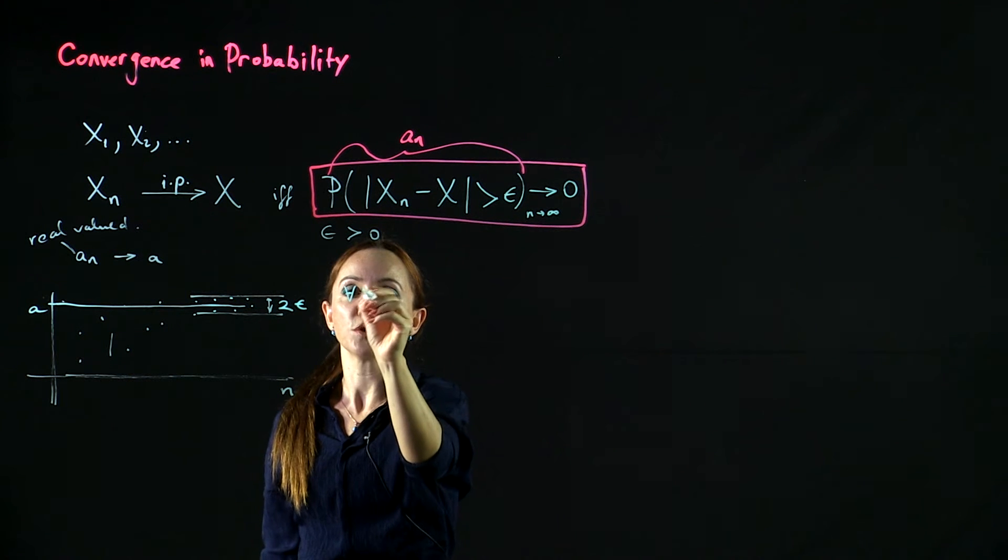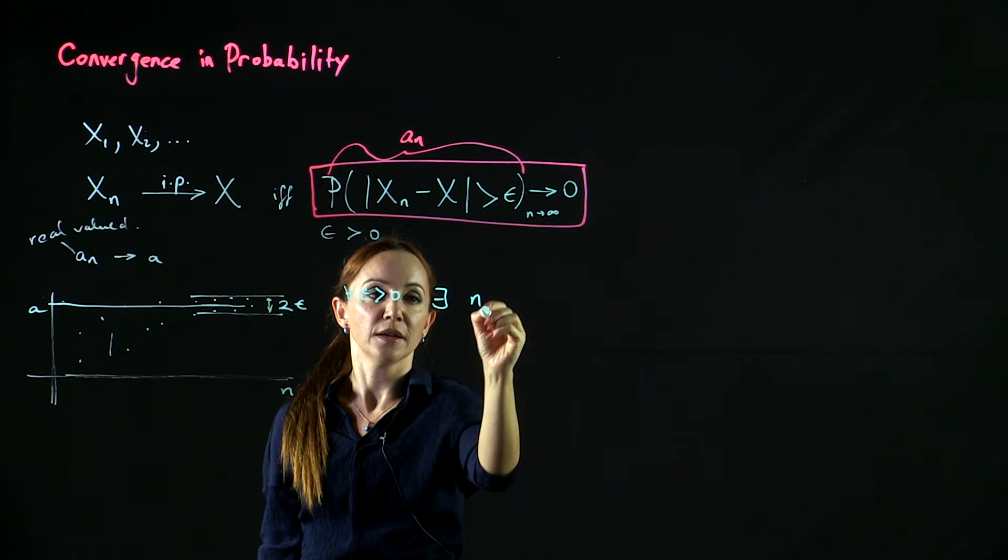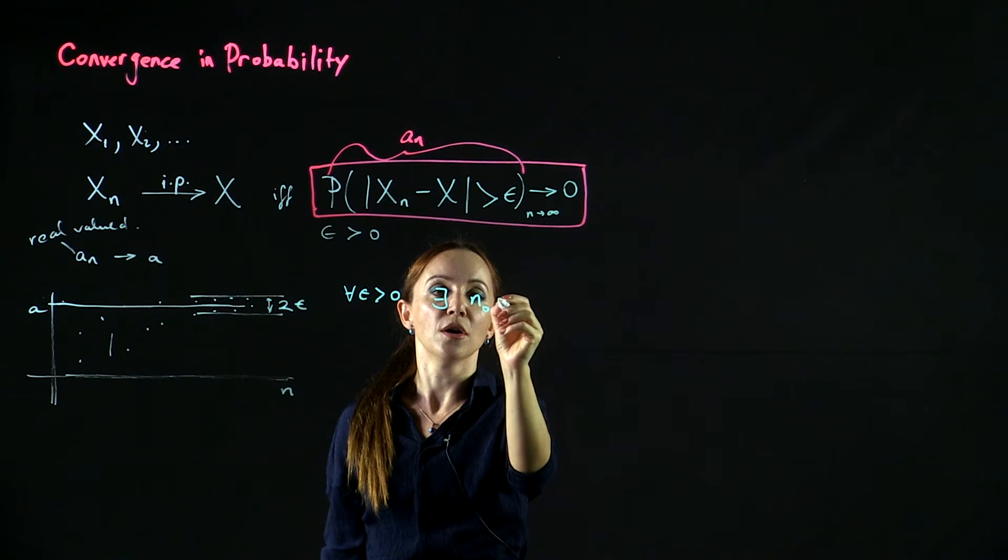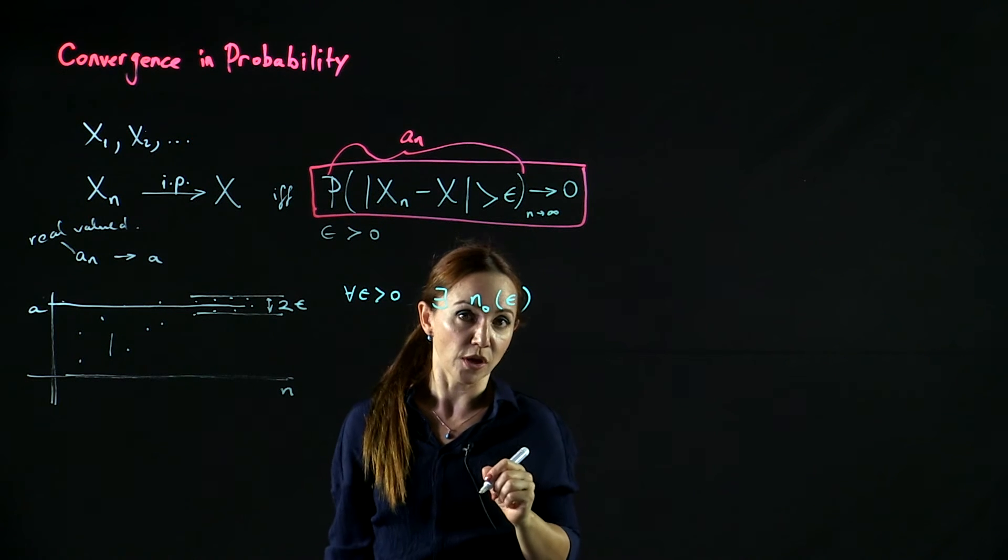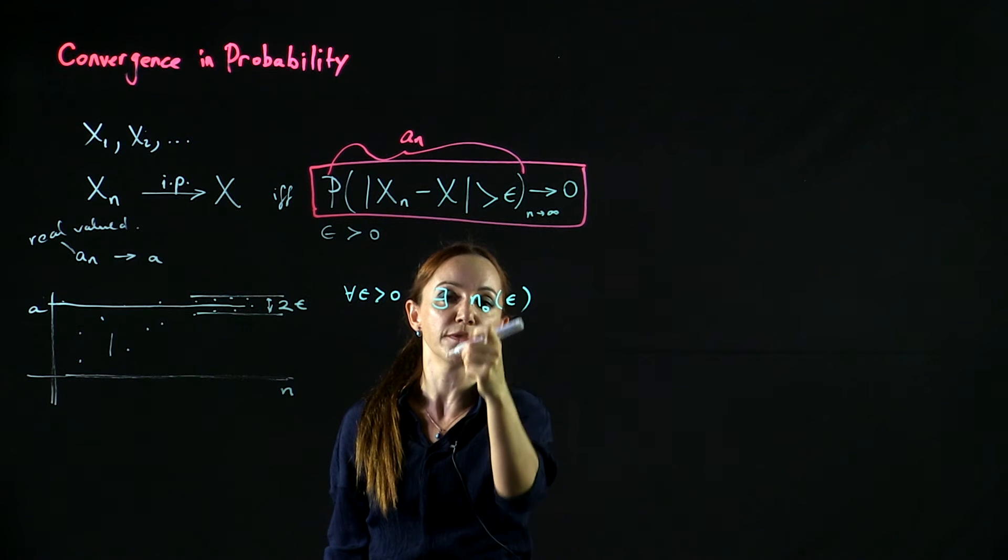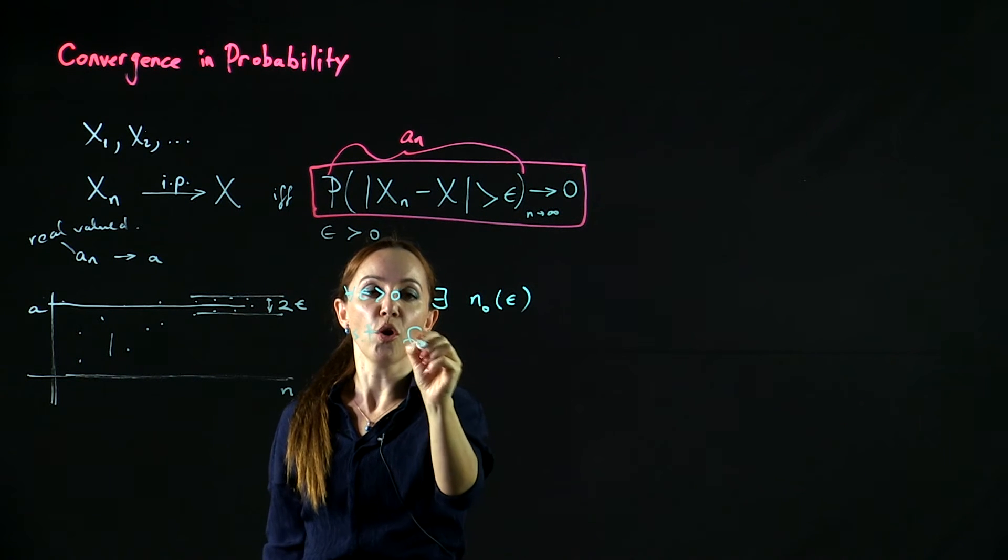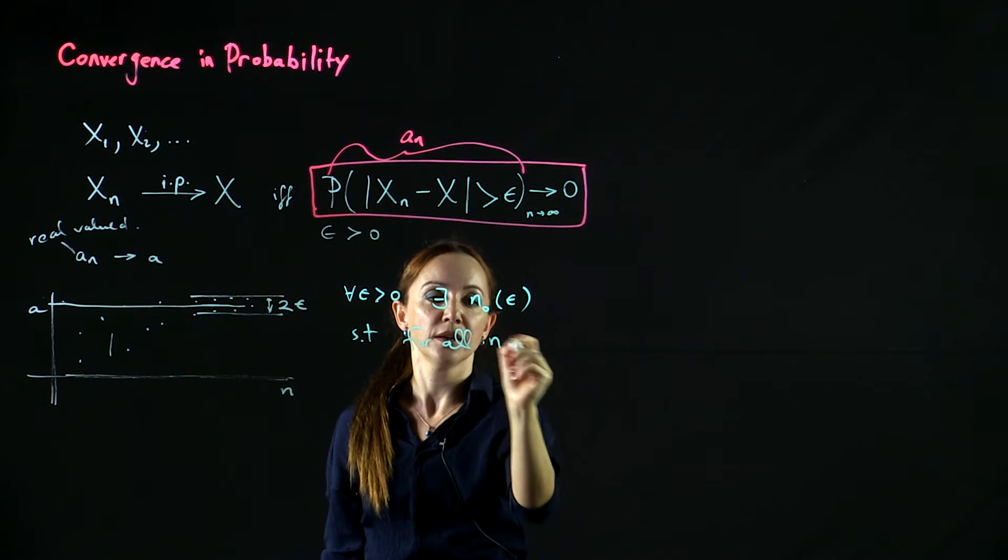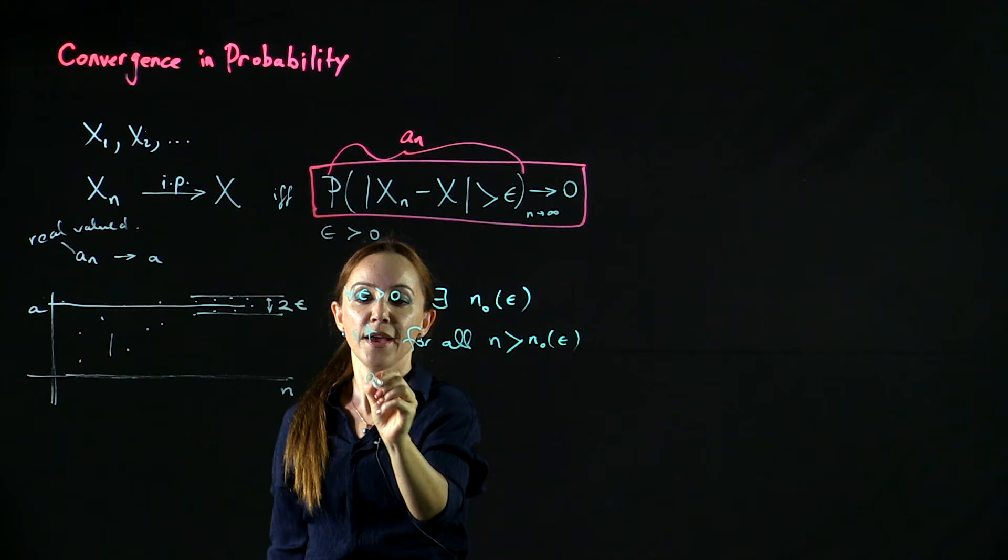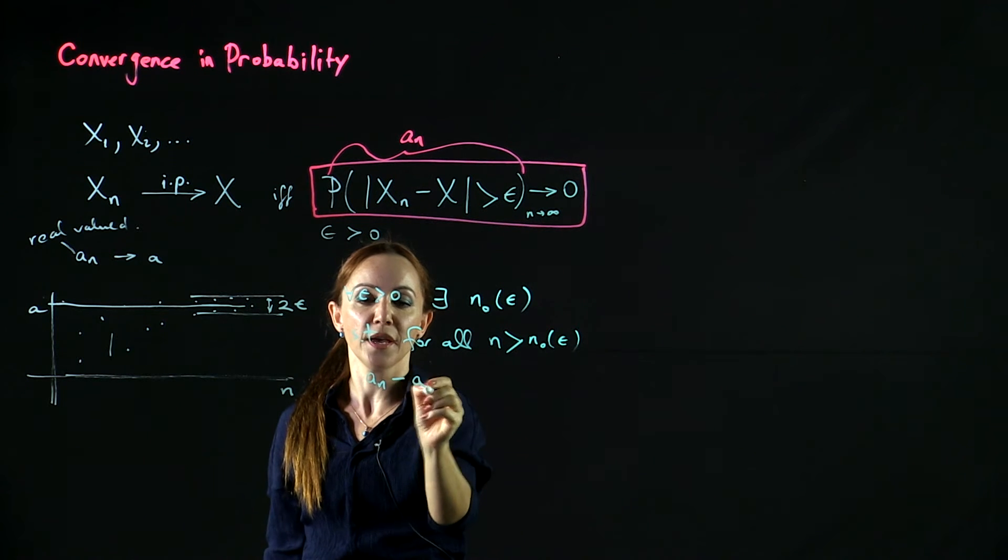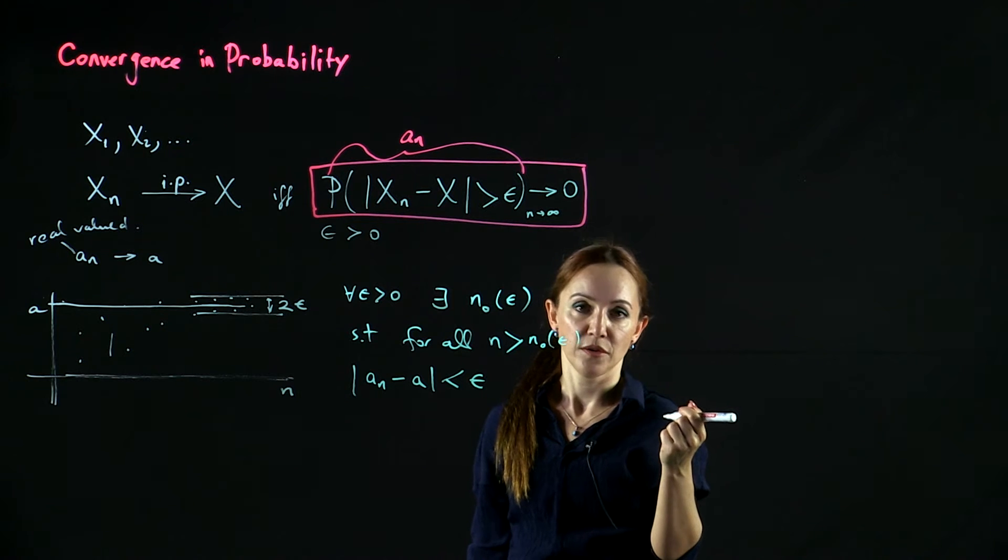Mathematically speaking, for any epsilon, there exists n sub 0 with respect to the epsilon, a large enough number n0 such that for all n after n0, an is within an epsilon neighborhood of a.